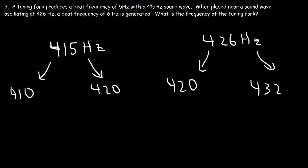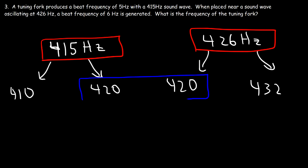In order to produce a beat frequency of 5 and 6 with these two sound waves, the tuning fork has to be 420, because that's the only frequency that matches with these two values. It's the only one that's the same for both of them, so that's the frequency of the tuning fork.